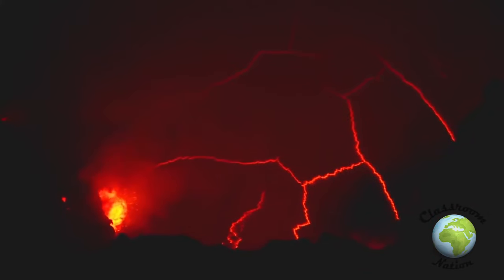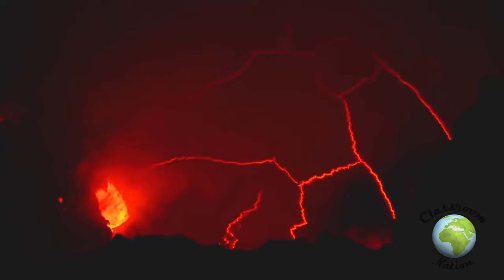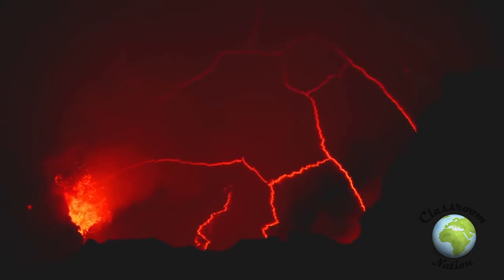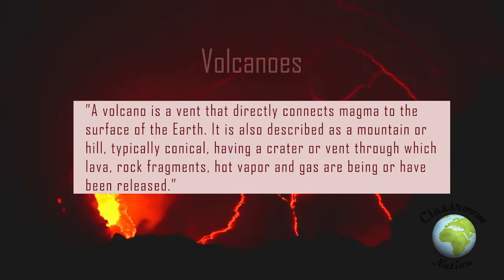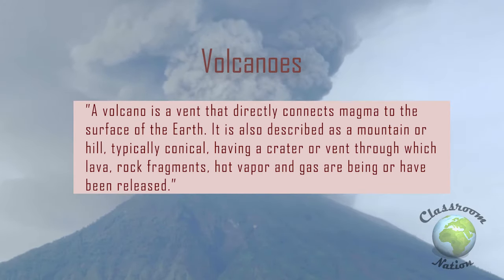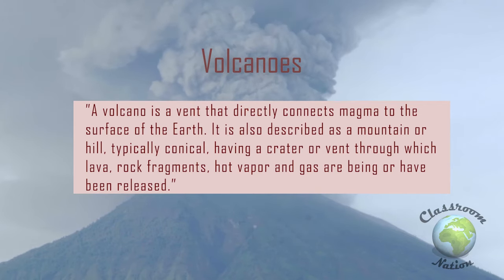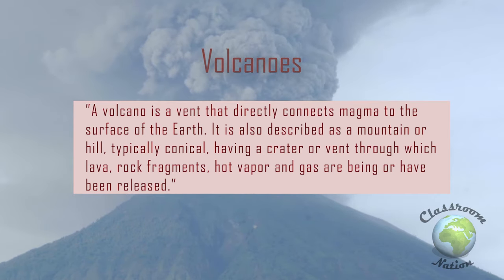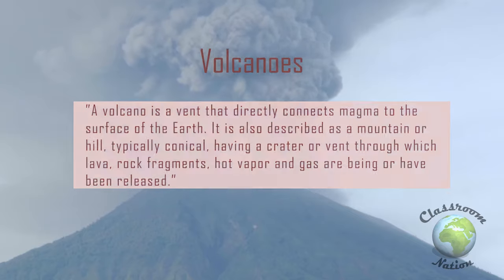Just to start with, I will give you a basic definition of what a volcano is before moving on to more detailed material. A volcano is a vent that directly connects magma to the surface of the earth. It is also described as a mountain or hill, typically conical, having a crater or vent through which rock fragments, hot vapour and gases are being or have been erupted from the earth's crust.